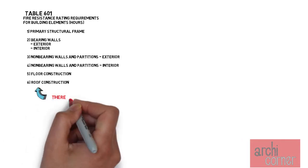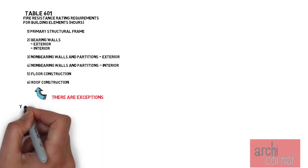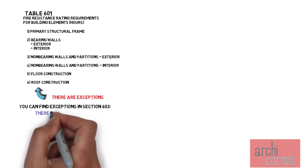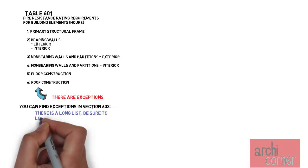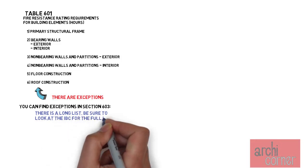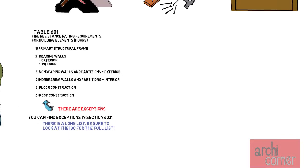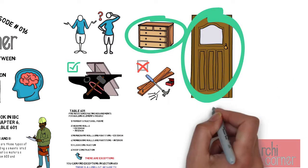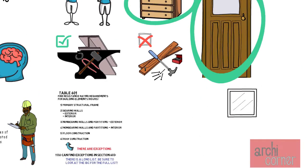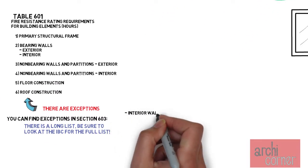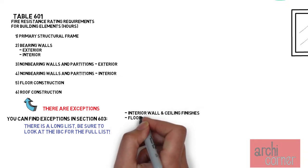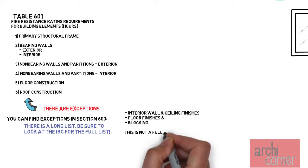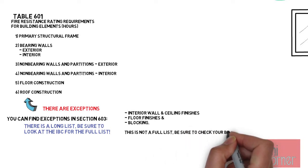Section 603 also has some exceptions for other items that may be combustible. It's a long list — currently there are about 26 different items that are exempted, some of which we've already talked about: items such as millwork, doors, door frames, window sashes and frames, interior wall and ceiling finishes, finish flooring, and blocking that can be used for handrails, millwork, or other items.